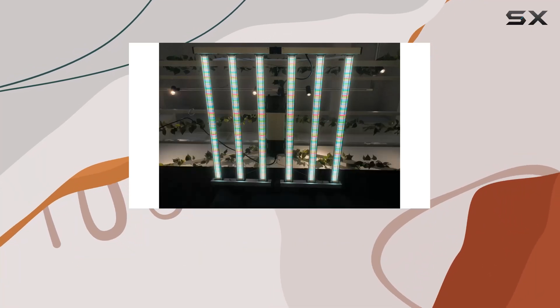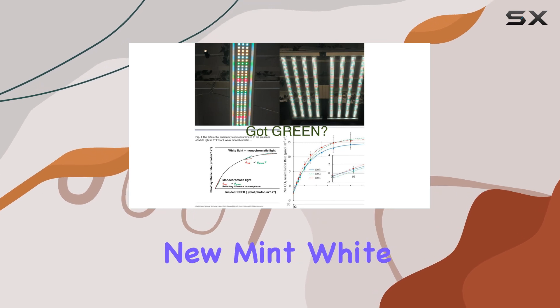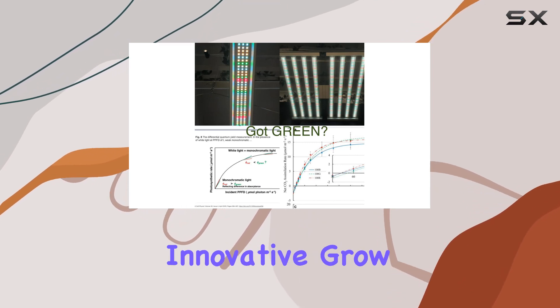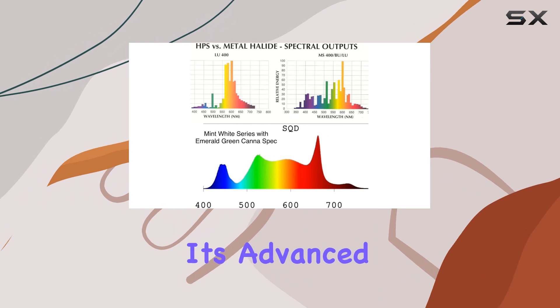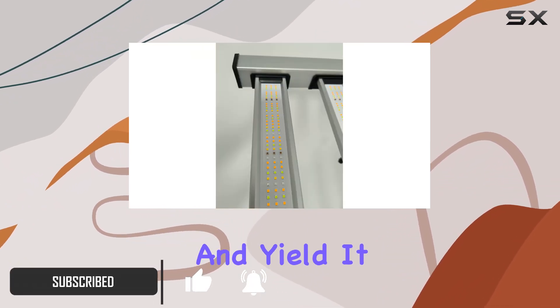Today we're diving into the Mammoth Lighting Six Bar 680W LED grow light from their new Mint White series. This innovative grow light packs a punch with its advanced Mint White Evo diode technology, promising enhanced plant growth and yield.